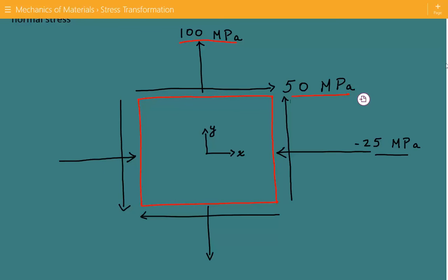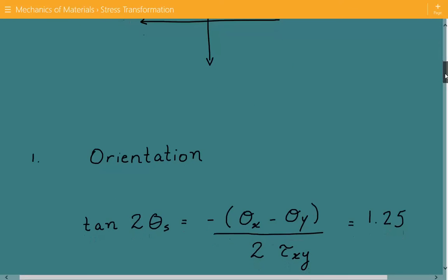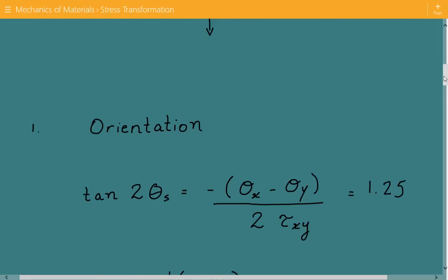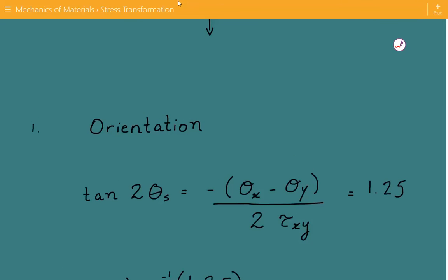The first thing we're going to do is find the orientation of this element associated with the maximum in-plane shear stress using this equation. The equation is tan(2θ) equals negative, then the stress in the normal x direction minus the stress in the normal y direction, divided by 2 times the shear stress. This quantity comes out to be equal to 1.25.